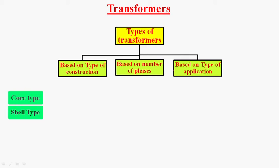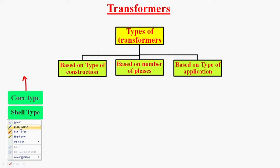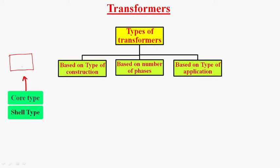Based on type of construction, we have core type transformer and shell type transformer. In case of core type transformer, the construction of the core is like this. In case of shell type transformer, the construction of core is like this — it is a three-limbed one, three legs like this. In case of core type transformer, the core is surrounded by the winding.